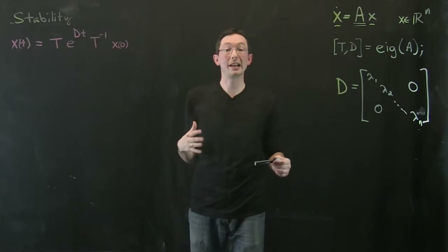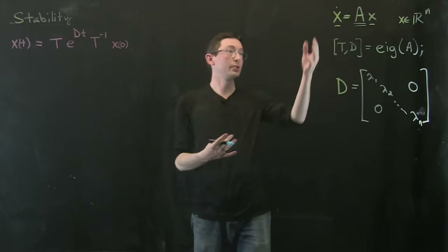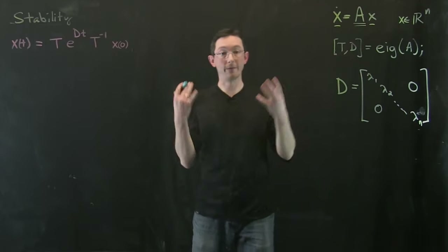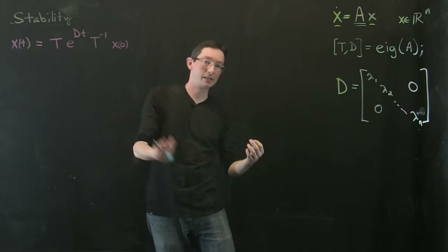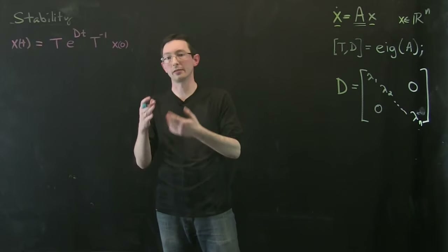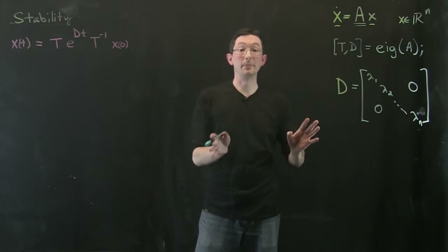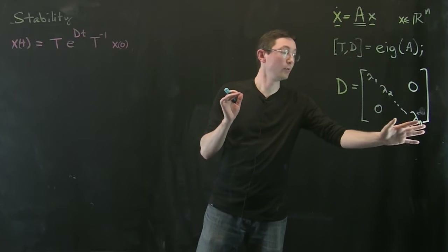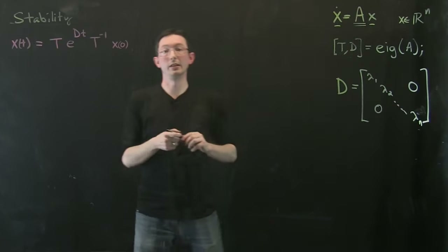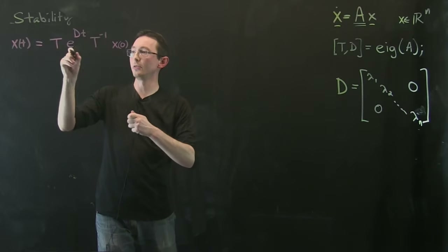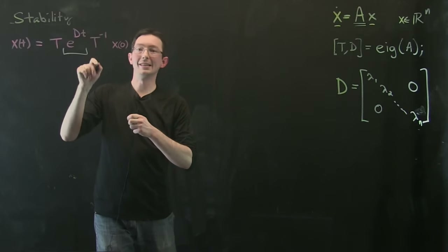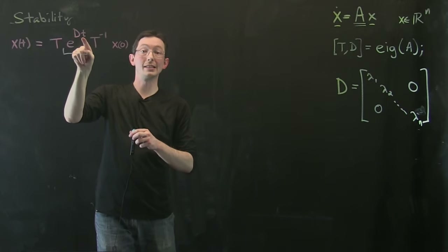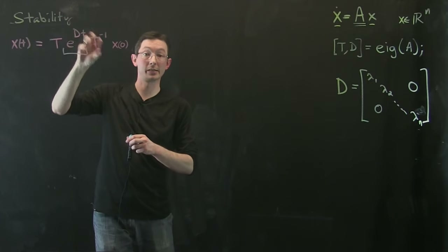There are whole classes on ordinary differential equations, linear algebra, and dynamical systems covering phase portraits, saddles, sinks, centers, and all kinds of deep and interesting material. But we're just going to get the bare minimum needed to understand stability here, and it all has to do with e to the diagonal matrix D times time — this is where things happen as time goes to infinity.